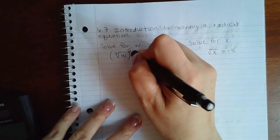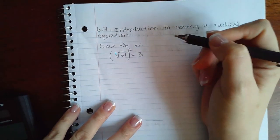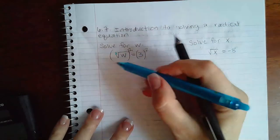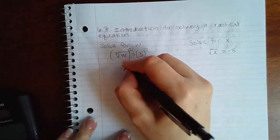Whatever I do to one side, I have to do to the other side. So here these will undo each other and I will get w by itself, and over here I'll get 3 squared which is 9.